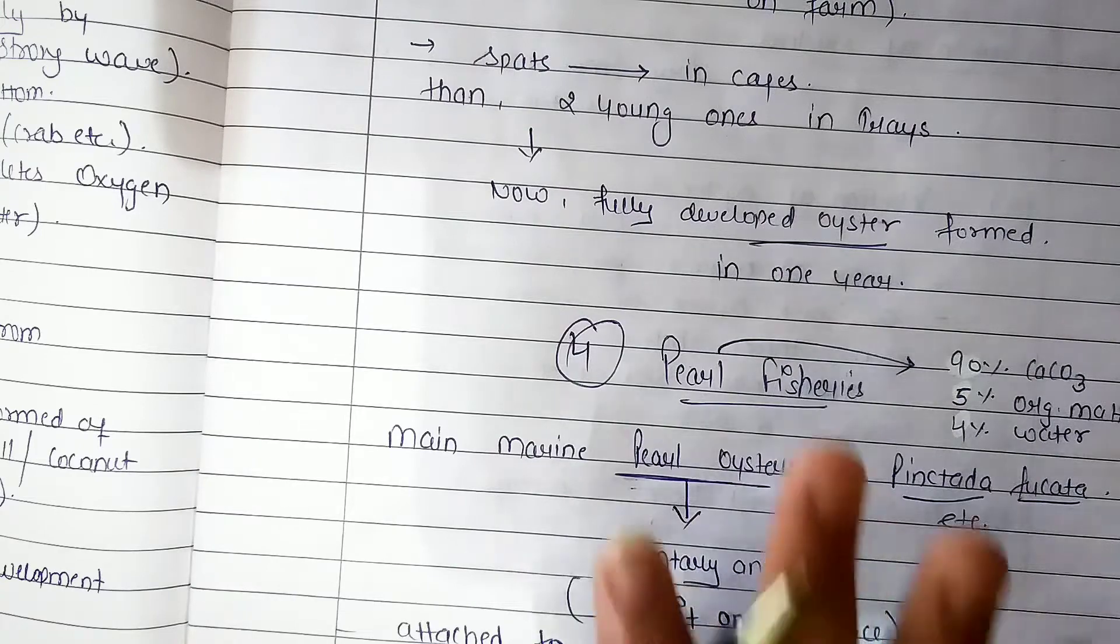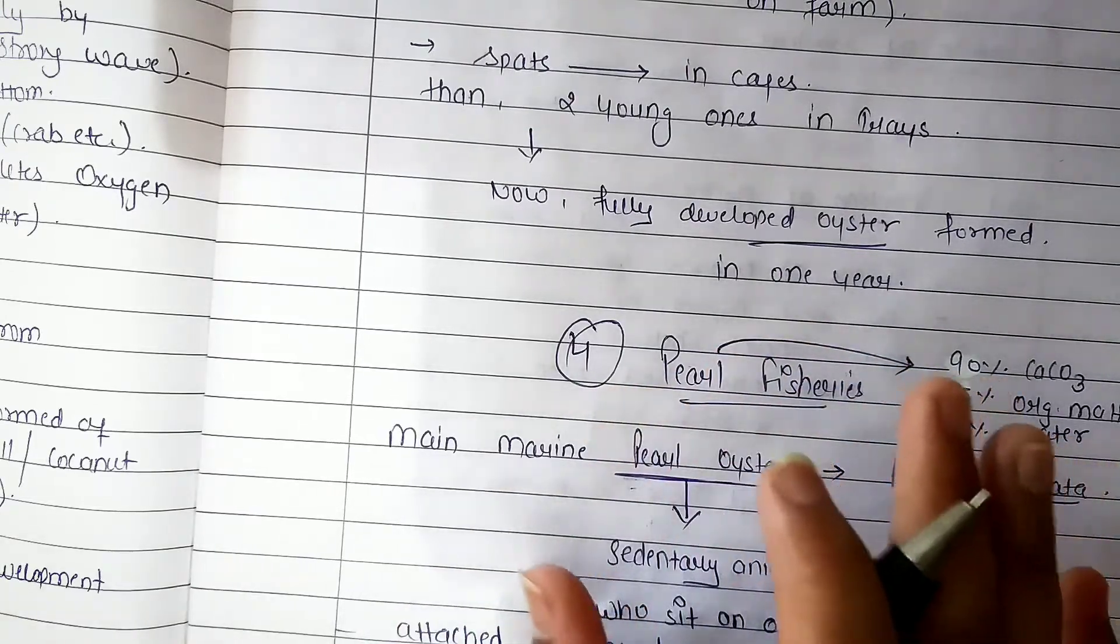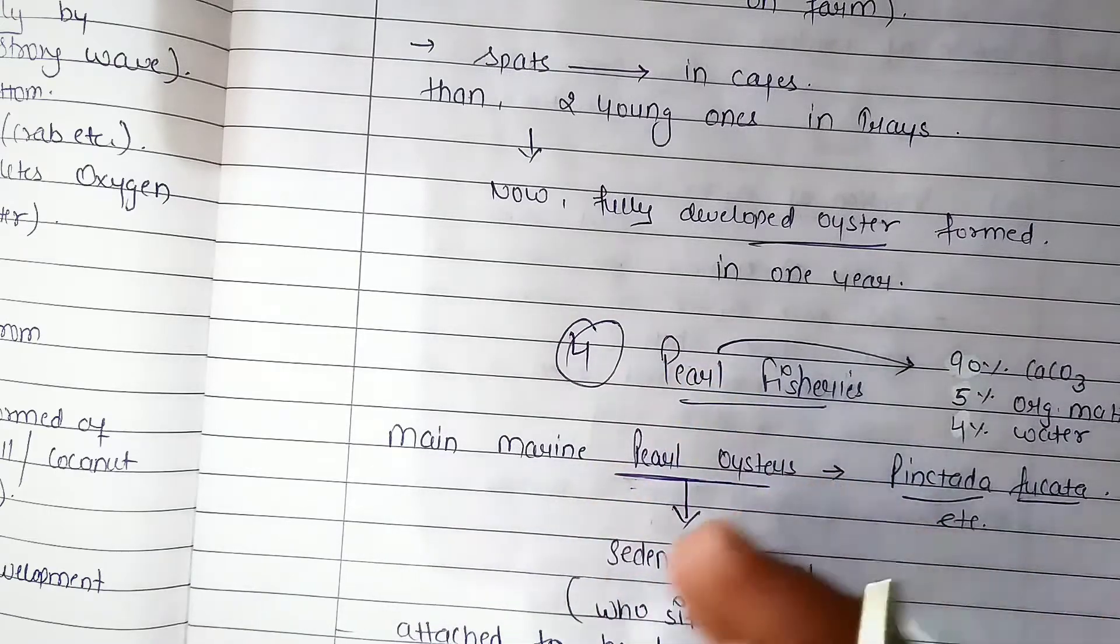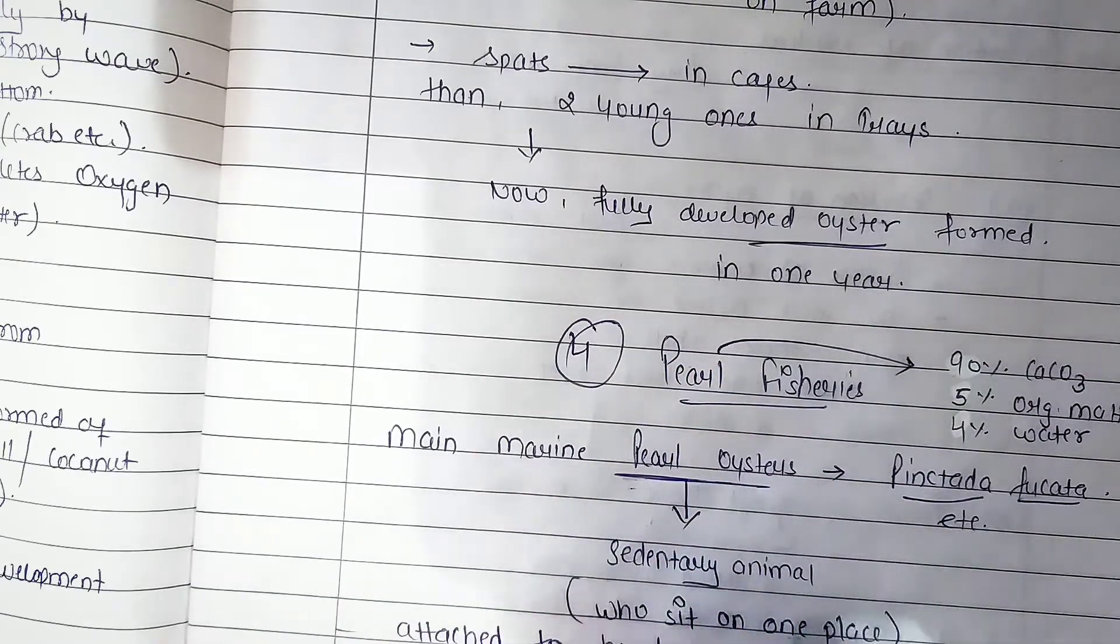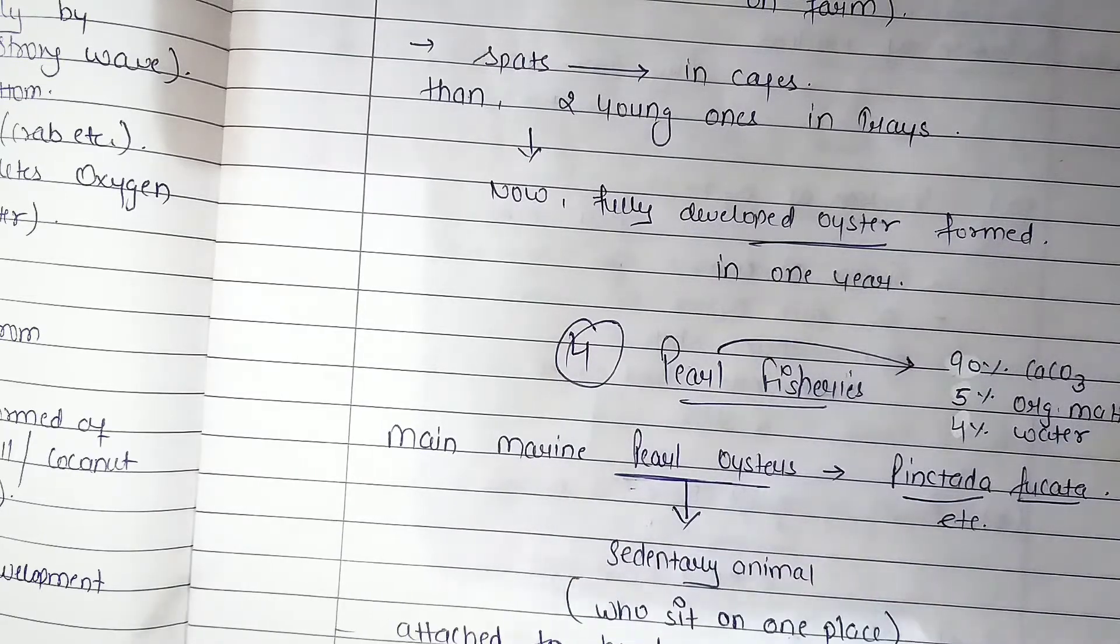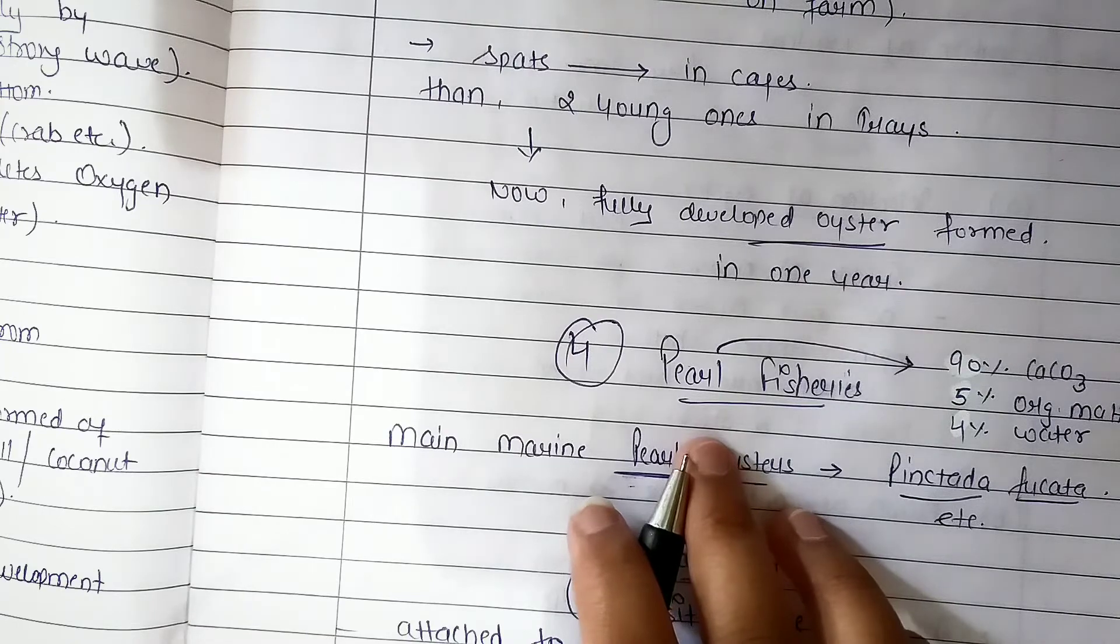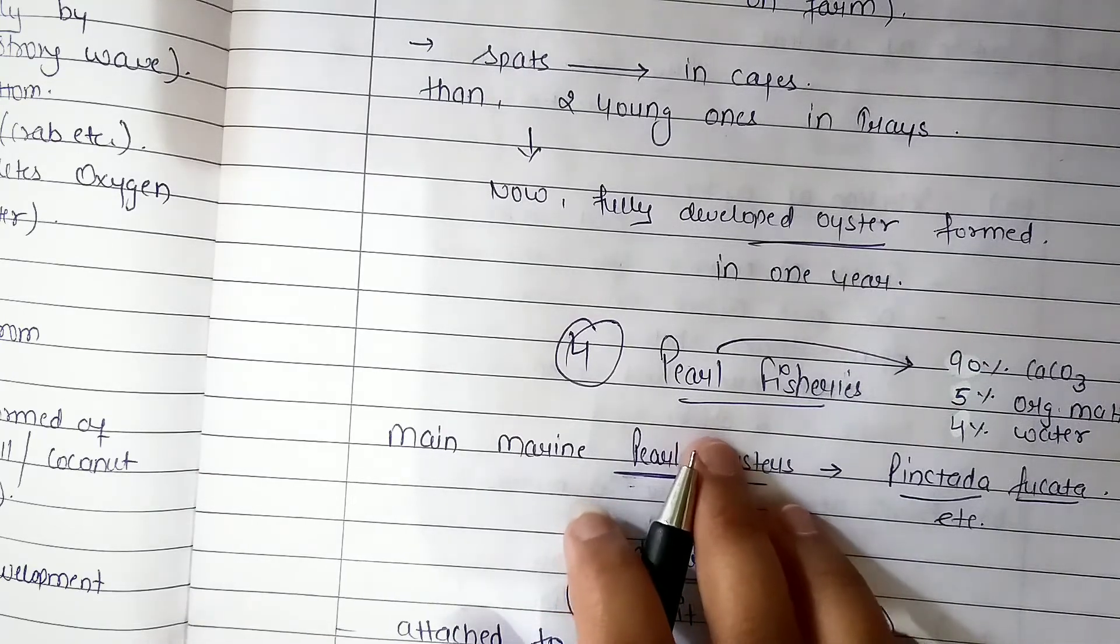We have done four types of culture: fin fishes, mollusk, crustaceans, and pearl fisheries. All of these processes are the same: natural water bodies are selected, breeding and spawning, then rearing. Pearl fisheries is the insertion of nucleus. We will see the next video, bye bye.